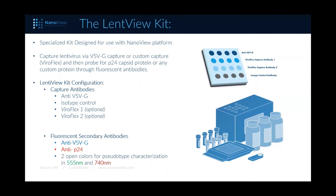The Lentiview kit is being released here. Along with your washer and reader, you receive a kit box with 16 test chips. The capture configuration includes an anti-VSVG capture row as standard, a isotype control, and two Bioflex custom spots where you can make the chip capture other markers of interest. The secondary fluorescent antibodies provided are a labeled anti-VSVG detected in the blue channel and anti-p24 for capsid staining in the red channel. The additional two channels — one in green shown in some examples — are open for your use.